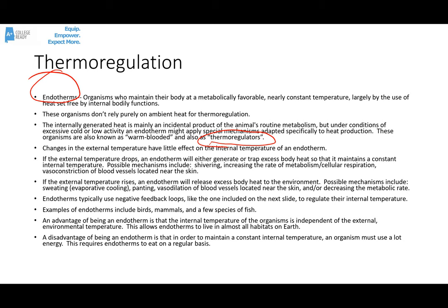Endotherms often use negative feedback loops, like the one we'll see on the next slide, to regulate their internal temperature. Examples of endotherms include birds, mammals, and a few species of fish. A big advantage of being an endotherm is that the internal temperature is independent of the external environment, allowing endotherms to be active and to live in almost any habitat on Earth. A disadvantage is that maintaining that constant internal temperature requires a lot of energy, so endotherms have to eat a lot and on a regular basis.